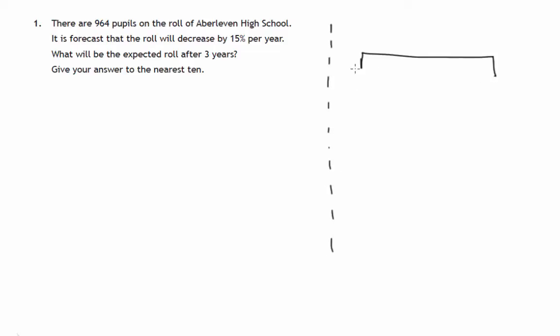You imagine the whole roll of the school and 15% gets chopped off after a year. What we could do is work out 15% of this and subtract it. However, if 15% disappears, it means that 85% remains.